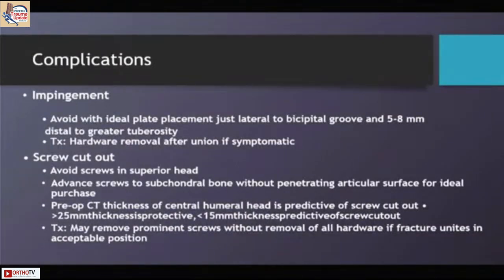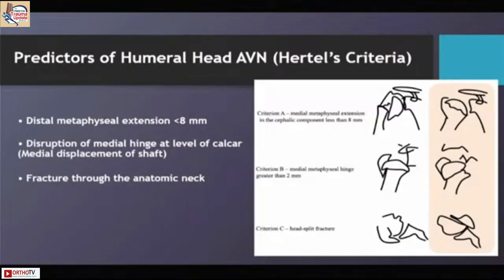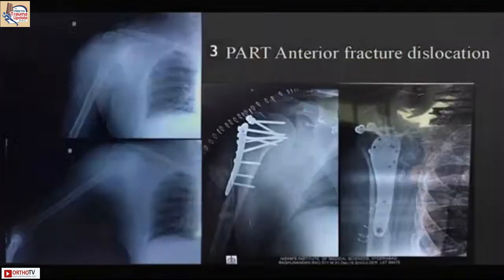It is important especially in the second variety, where you have a fracture at the anatomical neck, to measure your head scan and ensure you have very good screw length for good purchase. Union tends to occur even when there is AVN, especially with osteosynthesis. Use Hertel's criteria: if the distal metaphyseal extension is less than 8 mm, there is disruption of the medial hinge, or there is a fracture through the anatomical neck, expect AVN and plan for better fixation or arthroplasty.